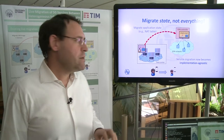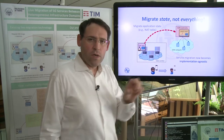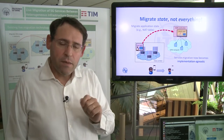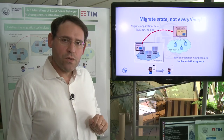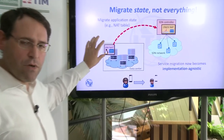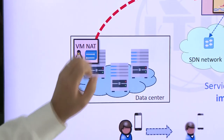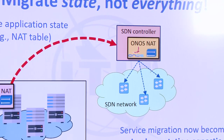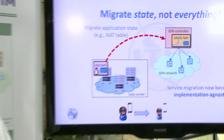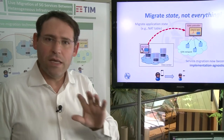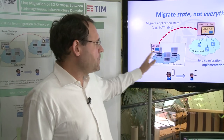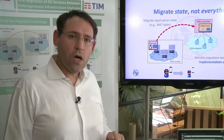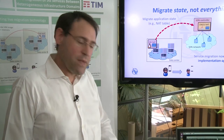If we can capture that data and transfer only that minimum amount, we achieve a faster and much more agile migration. More importantly, we can also support live migration between implementations — from a first implementation as a virtual machine to a completely different implementation, in this case a NAT implemented as an SDN application in an SDN controller. There is not a single line of code in common between the two implementations, making the service migration truly implementation-agnostic.